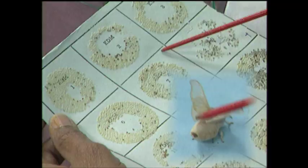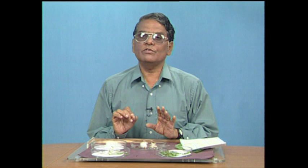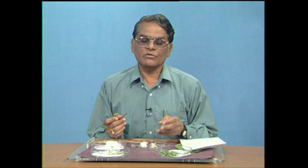In univoltine and bivoltine silkworms, the egg stage goes into diapause. In multivoltine silkworms, eggs hatch immediately. In tropical areas like Andhra Pradesh, Karnataka, and Tamil Nadu, the insect develops well at temperatures of about 28 to 32 degrees centigrade, and multivoltine silkworms are most prevalent.